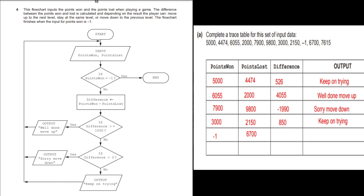The next input is points won 3000 and points lost 2150. Is points won equal to minus 1? No. Difference is 850. Is 850 greater than or equal to 1000? No. Is difference less than 0? No. So we output: keep on trying. The next input data is points won minus 1 and points lost 6700. Is points won equal to minus 1? Yes — so the program ends.